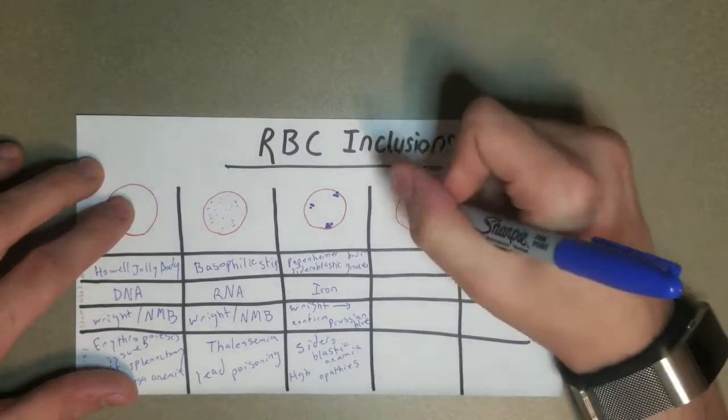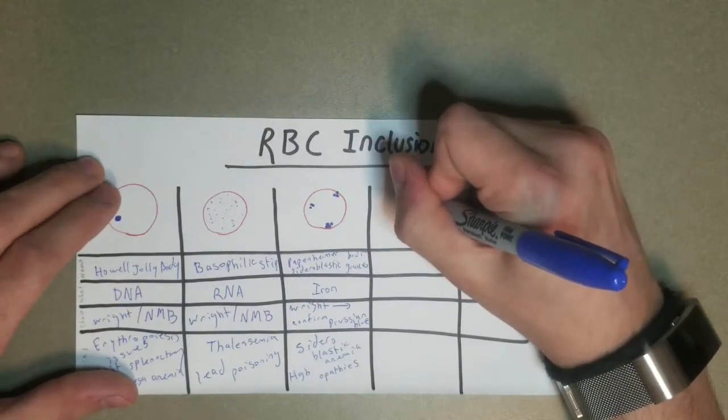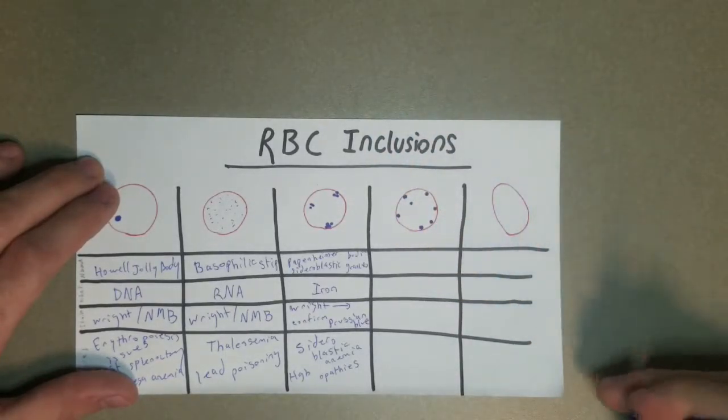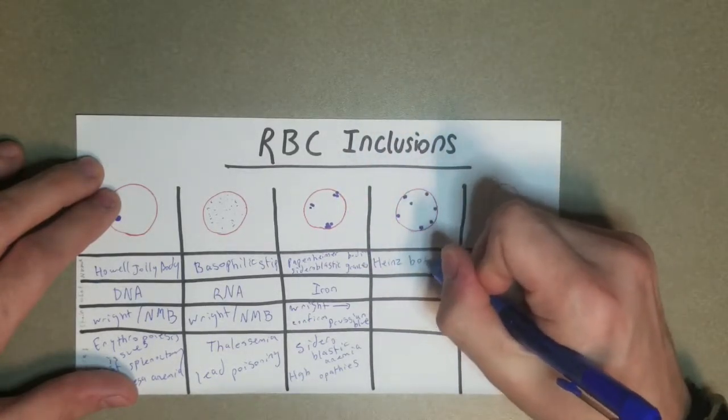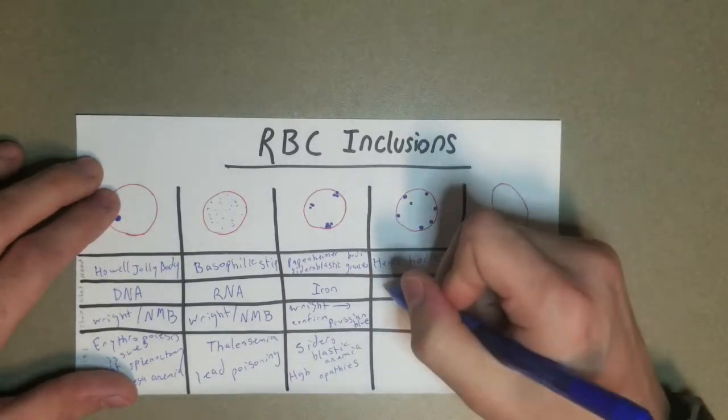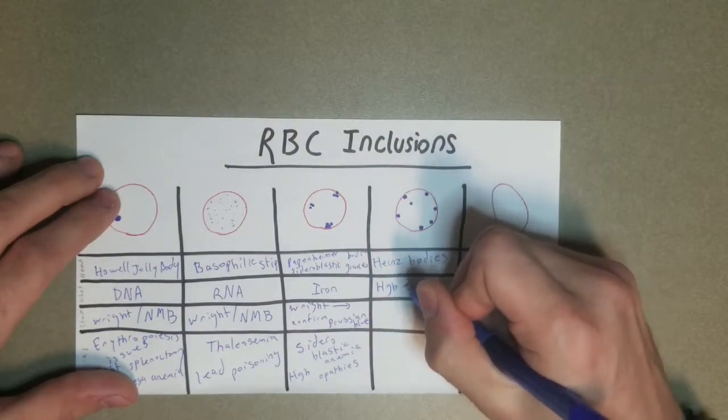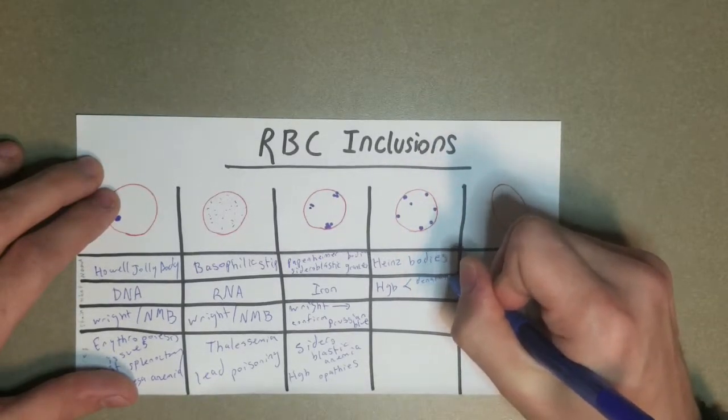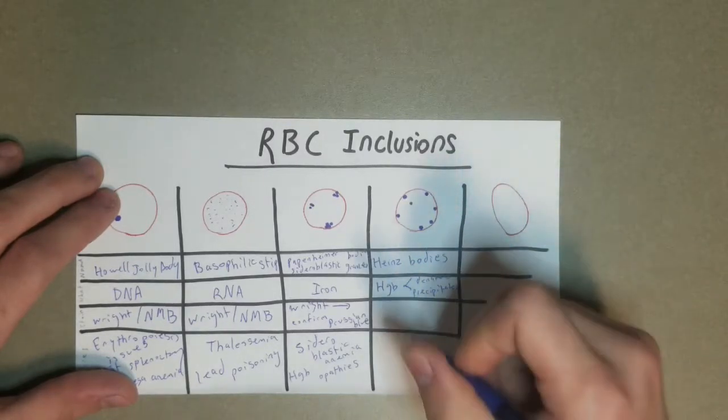So now we're going to go to the Heinz body. These are around the same size. I think usually they're a little bit smaller than a Howell Jolly body, but you're going to see multiple on average. And the way I remember that and the name is Heinz ketchup. You never usually use one ketchup packet, or at least I never do, because they're so small. I feel like you usually need multiple. And this is going to be made up of hemoglobin that is both denatured and or precipitated.